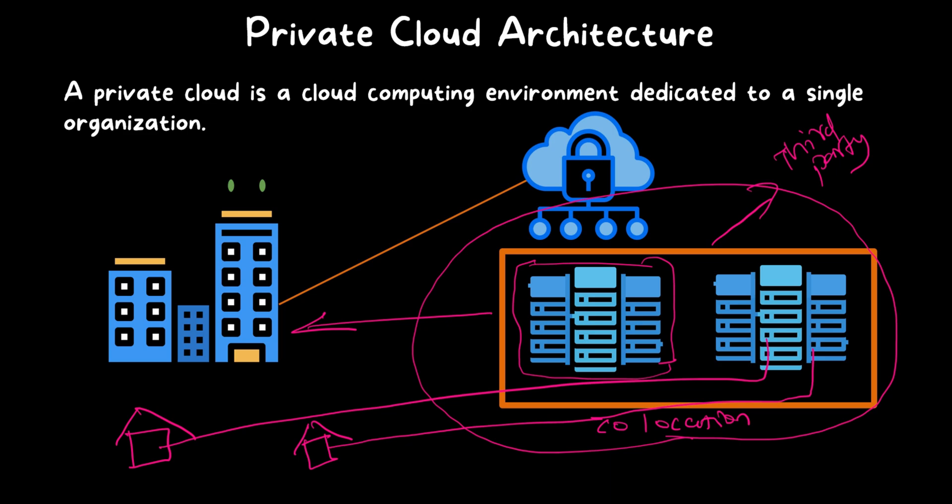This is the key difference between private cloud and public cloud. In public cloud, the cloud infrastructure is shared between multiple organizations. But in private cloud, the infrastructure is dedicated only to that single organization — the racks they own are not shared with any other organization. That's why it's called private cloud.